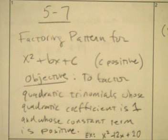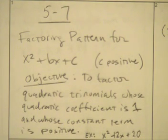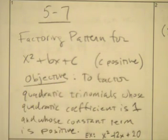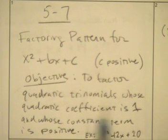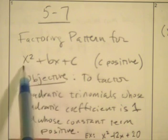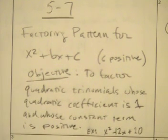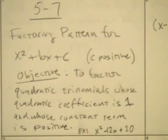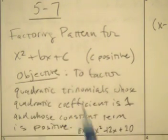The objective is to factor quadratic trinomials whose quadratic coefficient is one. This is the quadratic term — its coefficient is one. We're also factoring one whose constant term is positive.